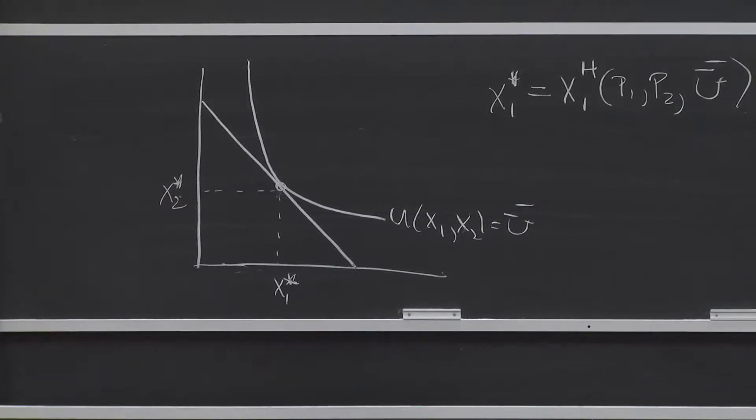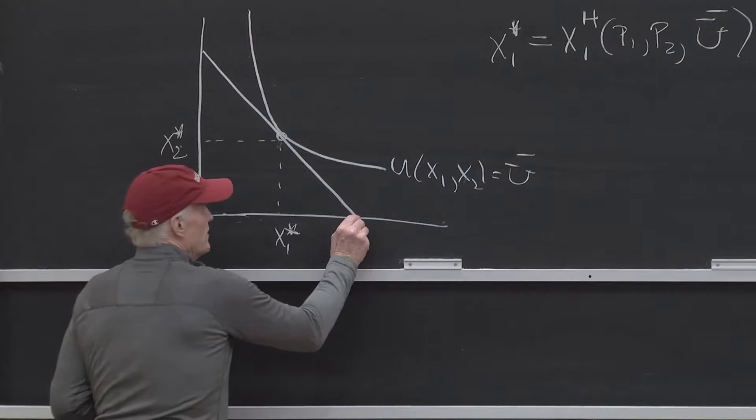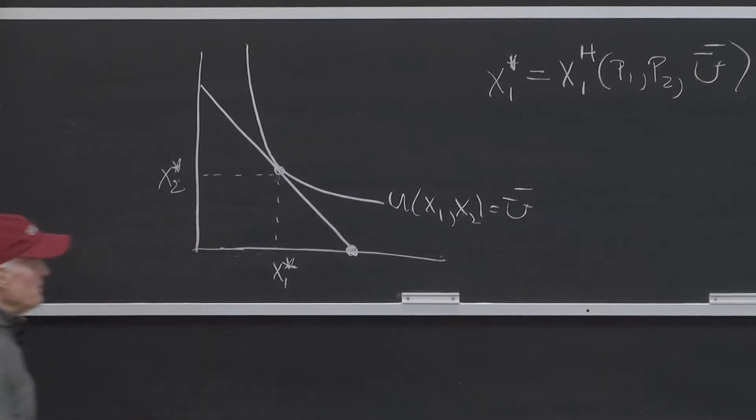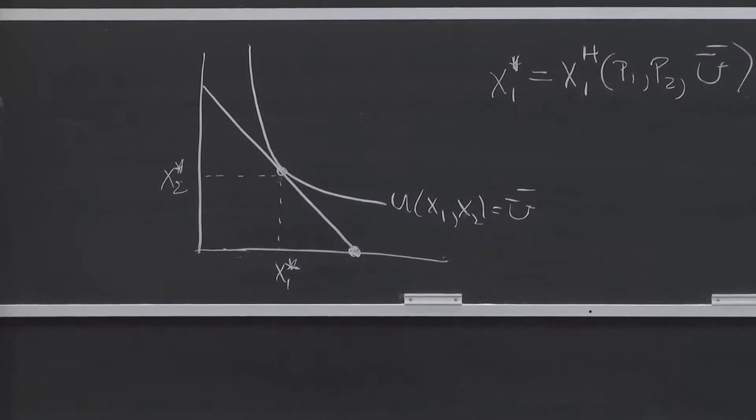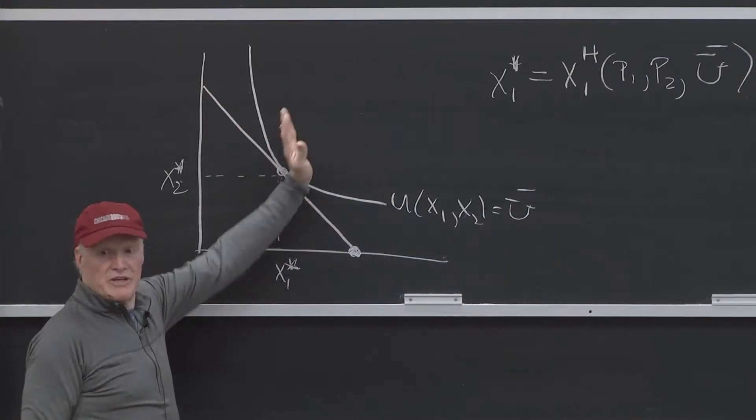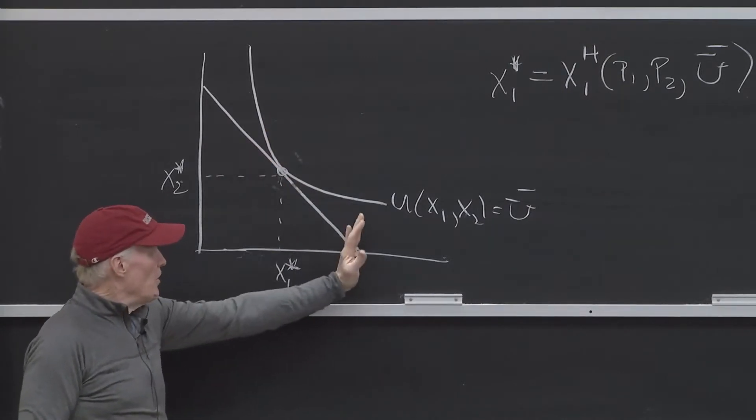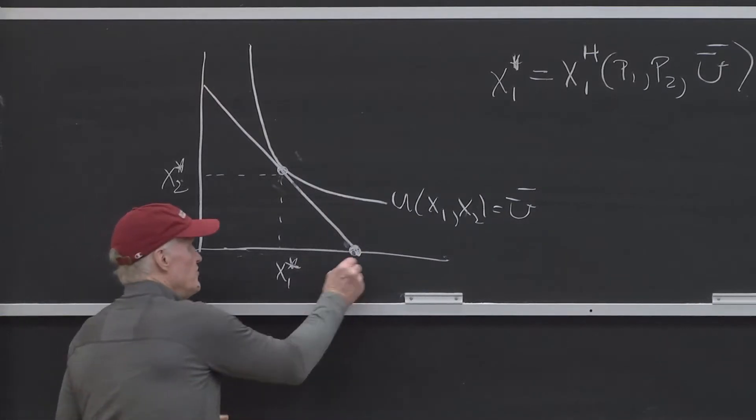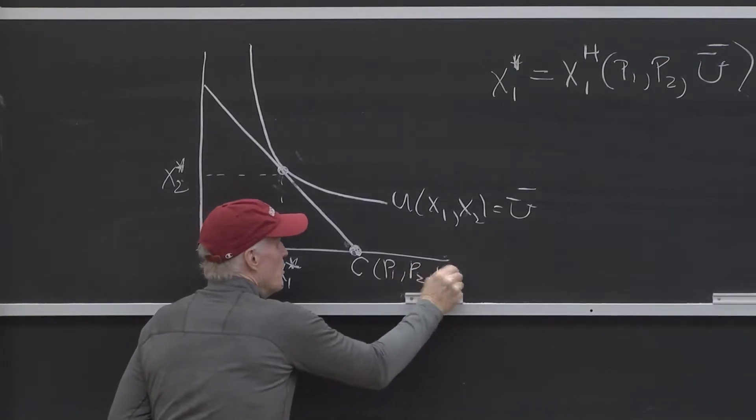Now, if I wanted to say, well, what does that correspond to in terms of a Marshallian world? The thing to realize is that this point here would be what? What would the value of that point be? How would I write the mathematical number corresponding to that point? Well, remember, this line represents the minimum cost way of achieving that level of utility. That's how we found that line. So, the cost level associated with this line must be C of P1, P2, and U bar.